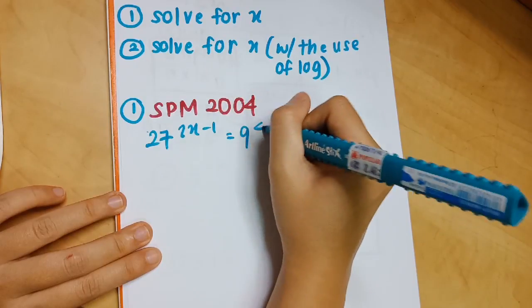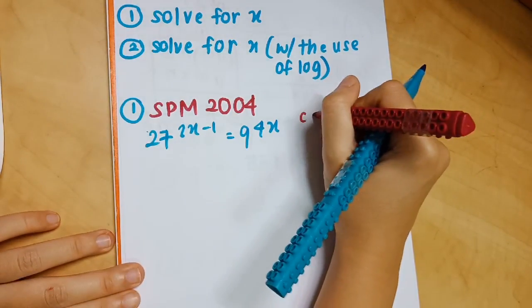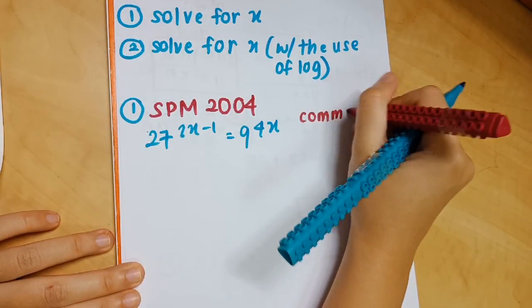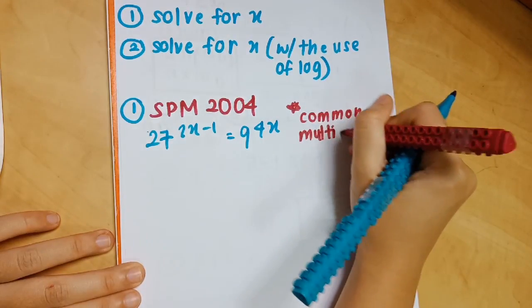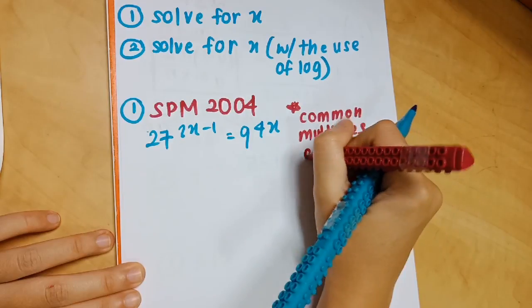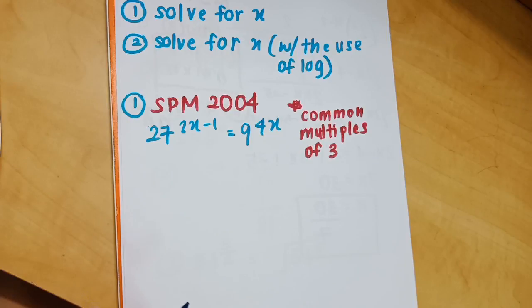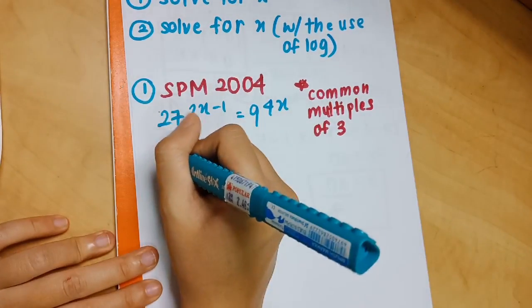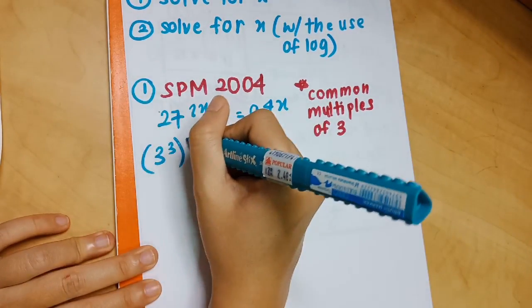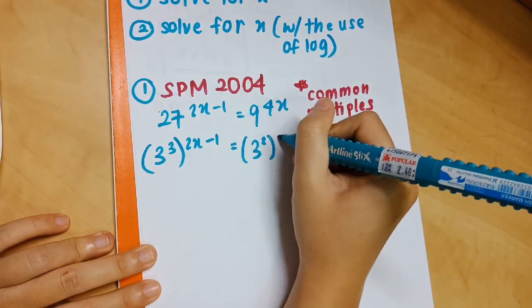The first example is a past year question from SPM 2004: 27^(2x−1) = 9^(4x), solve for x. The first step — as always — is to identify the common base. Seeing 27 and 9, the common base is 3. So write 3 cubed to the power of (2x−1) equals 3 squared to the power of 4x.